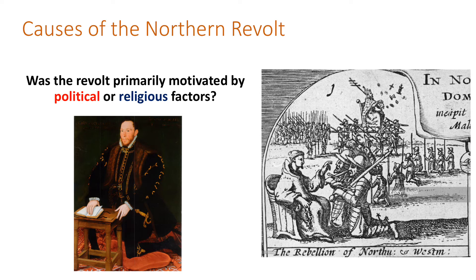So those are the causes of the Northern Revolt: religious factors including the desire to return to Catholicism, and political factors including the fact that Westmoreland and the Earl of Northumberland had lost political power, while the Duke of Norfolk didn't like new people like William Cecil and Robert Dudley having influence over Elizabeth in her court.